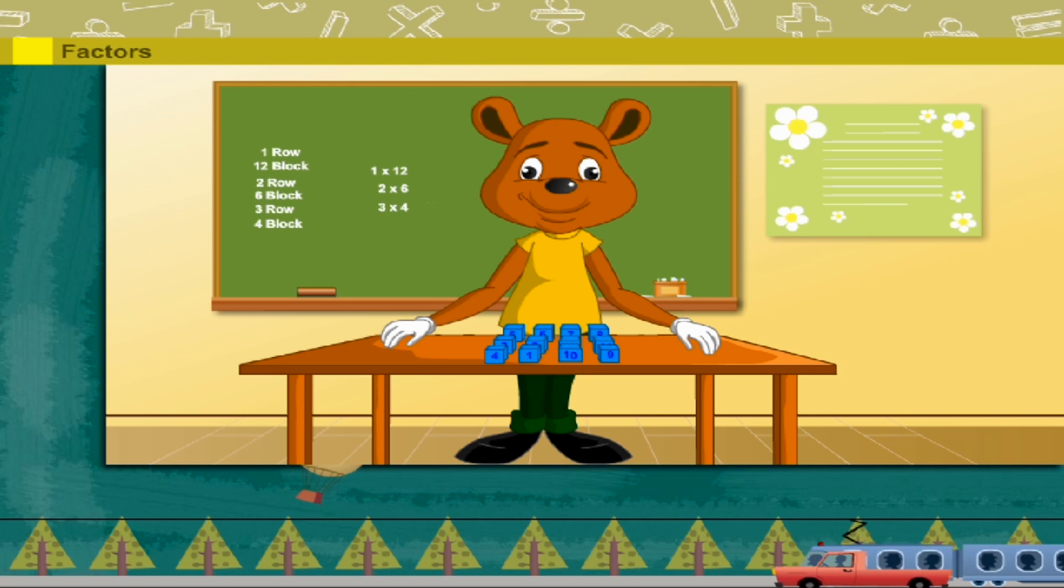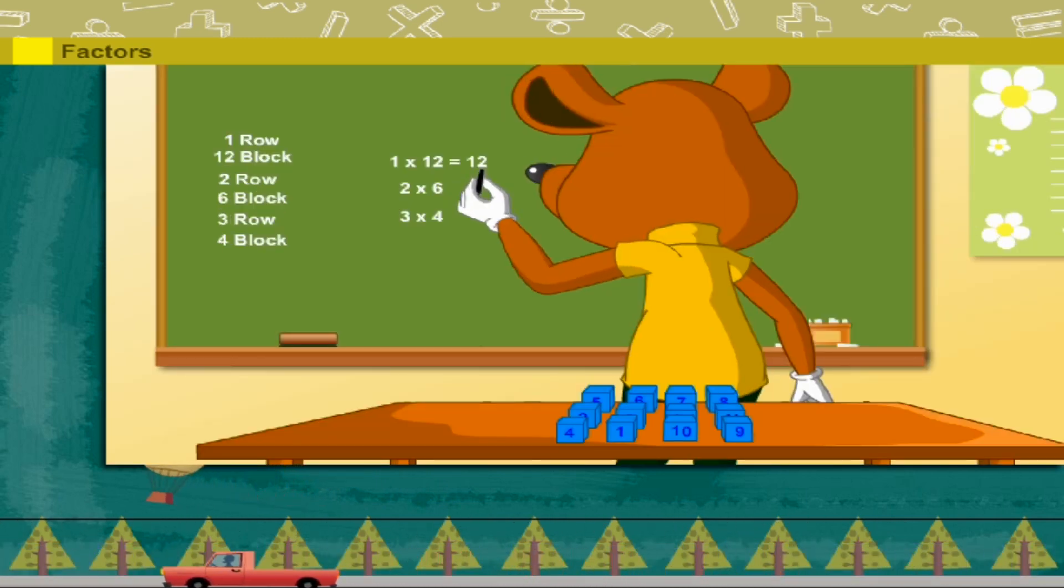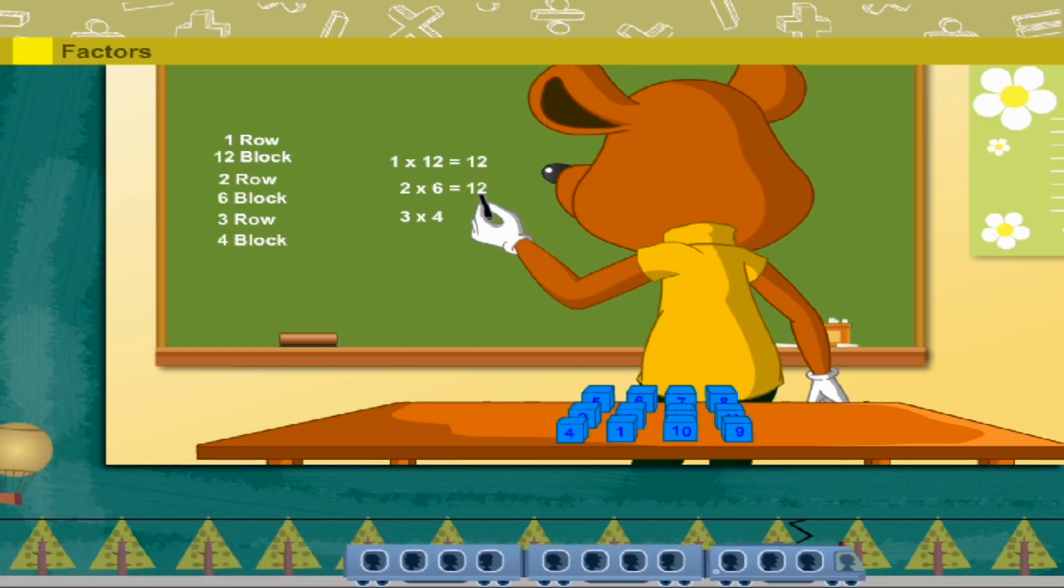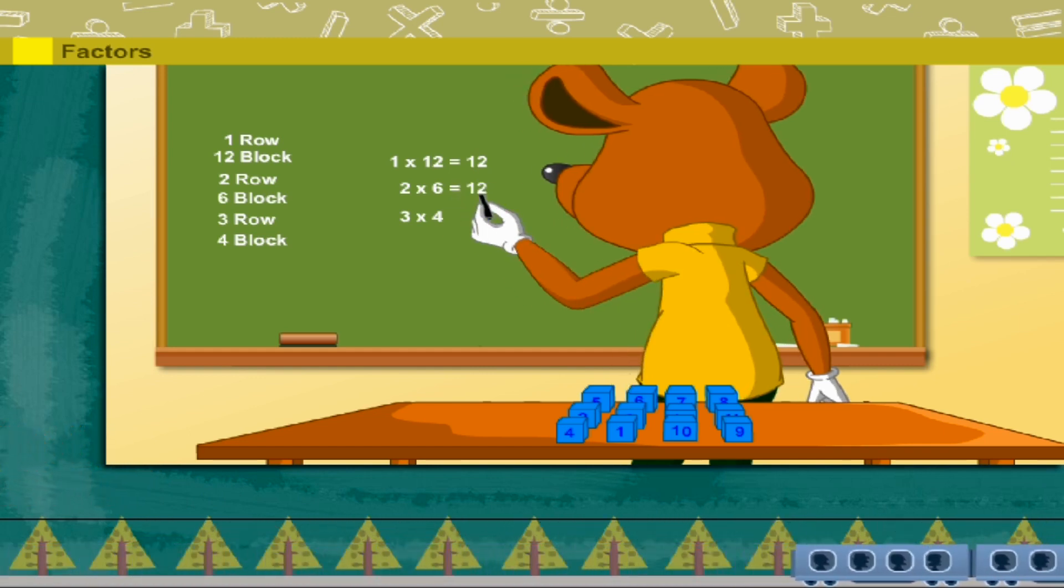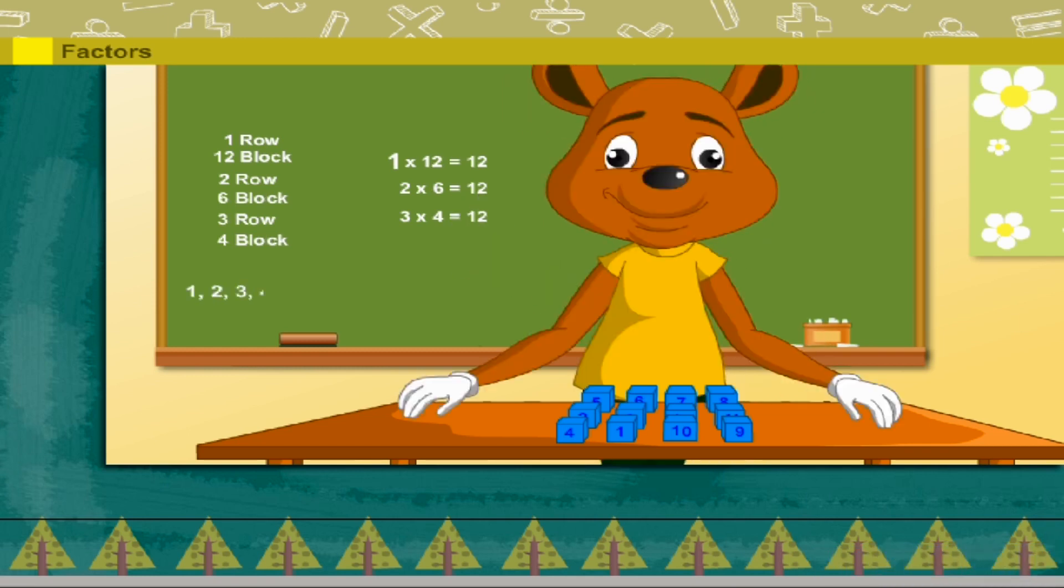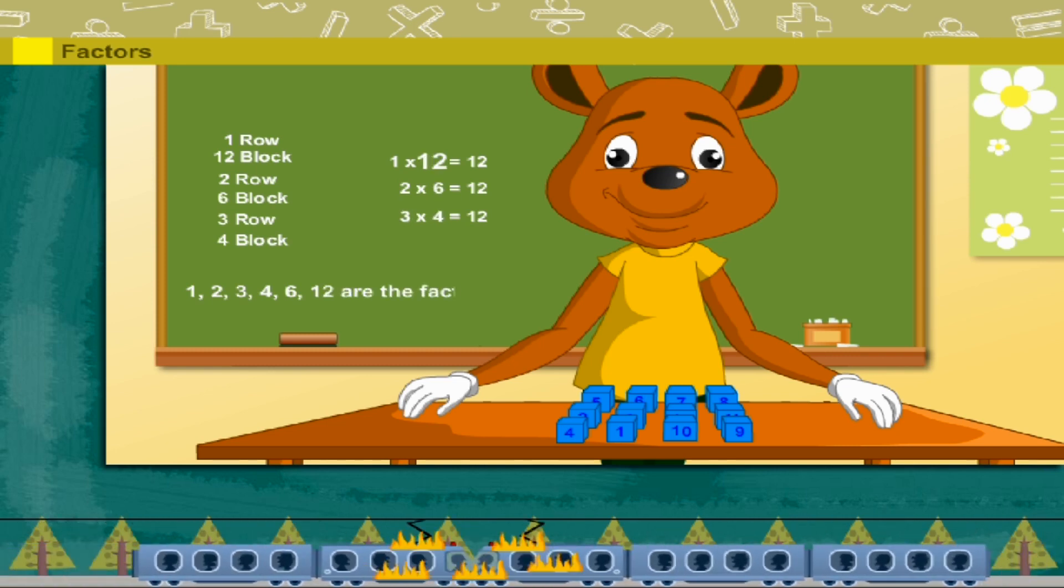Robbie has made his point clear. One into twelve is equal to twelve. Two into six is also equal to twelve, and three into four is also equal to twelve. So one, two, three, four, six, twelve are the factors of twelve. That's wonderful, Robbie.